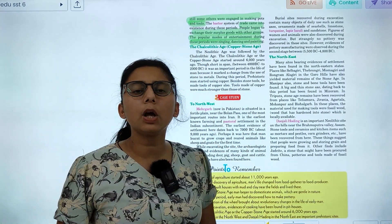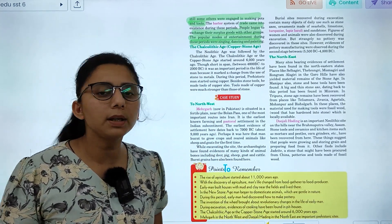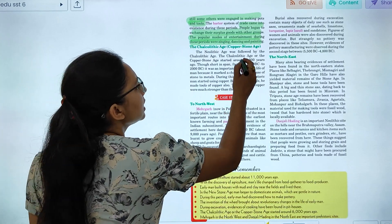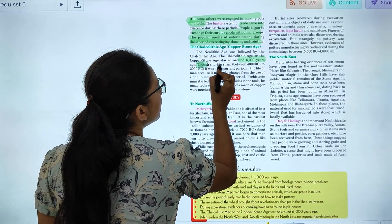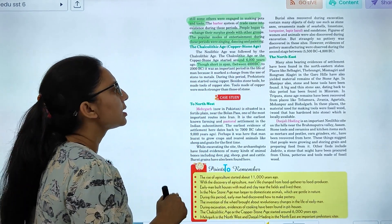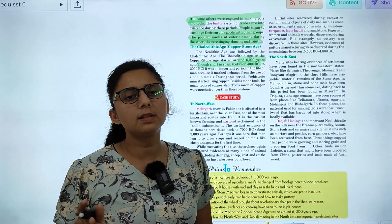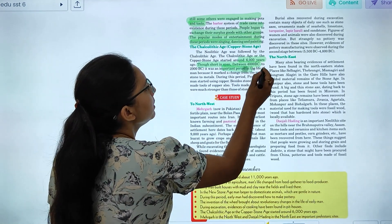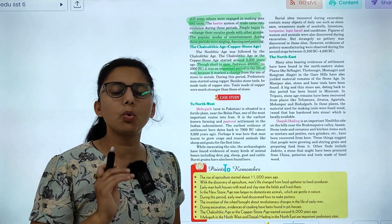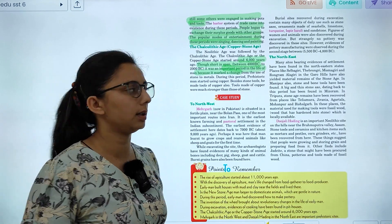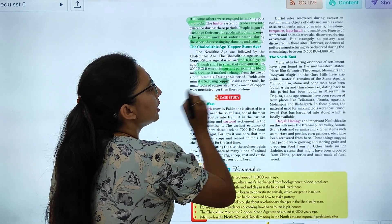Now, let's talk about Chalcolithic, the copper stone age. There was a discovery of copper. It started 6,000 years ago. It was 4000 BC to 2000 BC. It was an important period in the life of man. Because there was a change. The stone tools were replaced by metals. Besides stone tools, there were tools of copper. And the tools made of copper were stronger than that of stone.